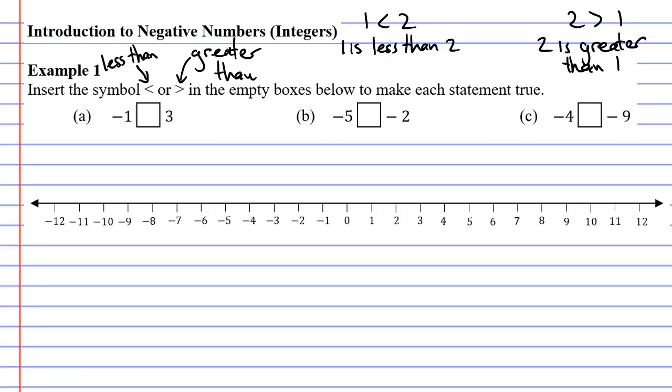And the best way to figure it out is to look at your number line and circle the two numbers. So, we've got negative one and three. And the numbers that are greater are further to the right.